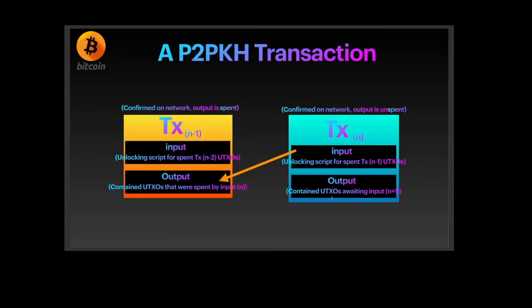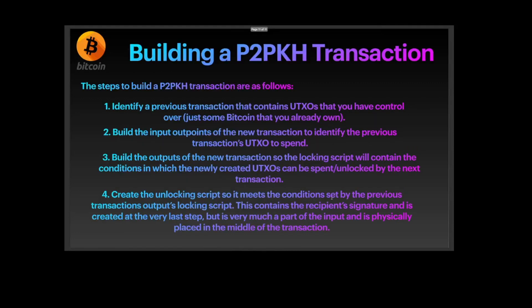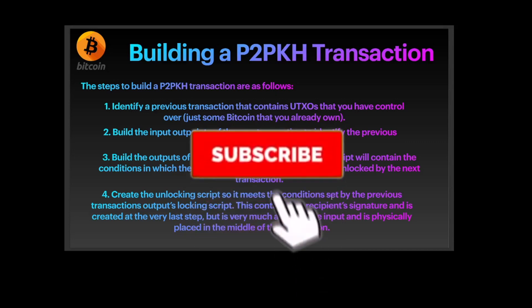To summarize: every transaction has an input and output. The input comes from the previous transaction's output for unspent UTXOs, and the output is actually the recipient's signature used by the locking script. I hope you have a basic understanding of Bitcoin Script. Also check out my video on UTXOs, which will give you more insight on how UTXOs work and what happens in a transaction. Thank you very much.